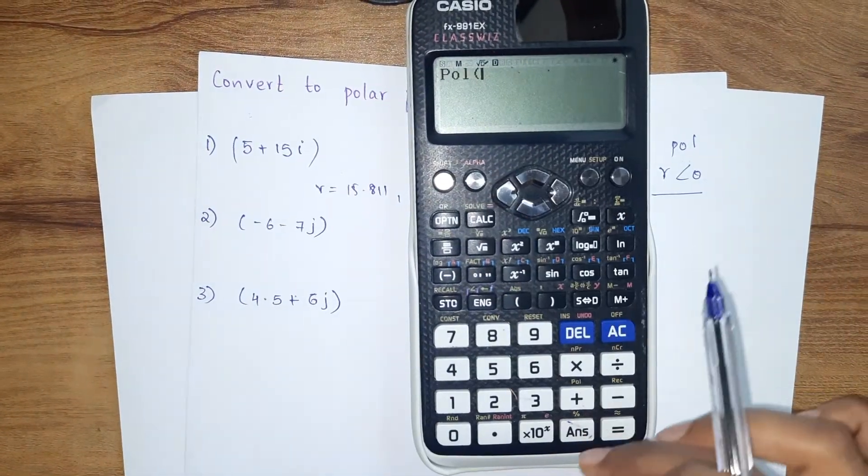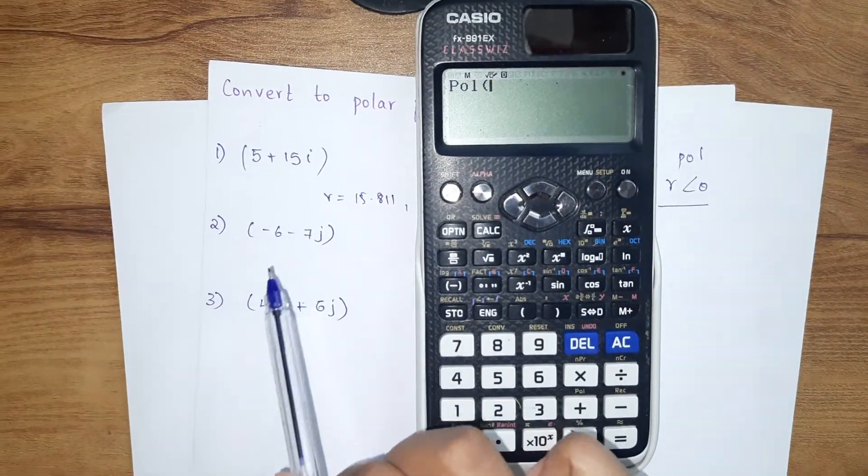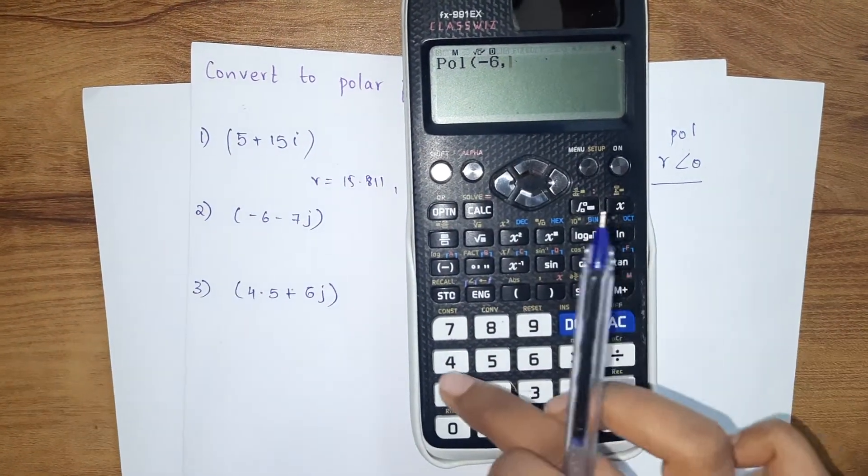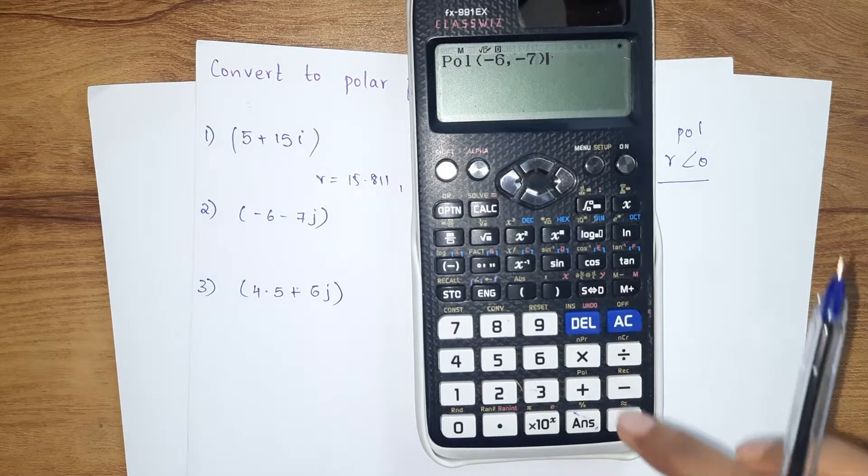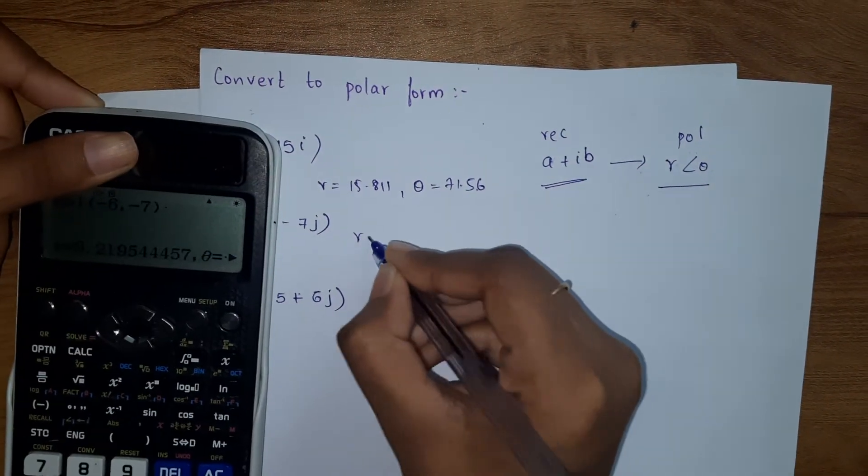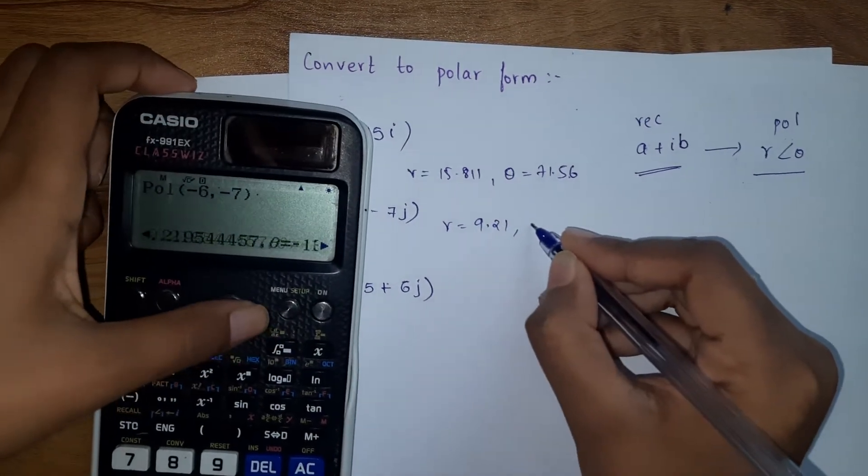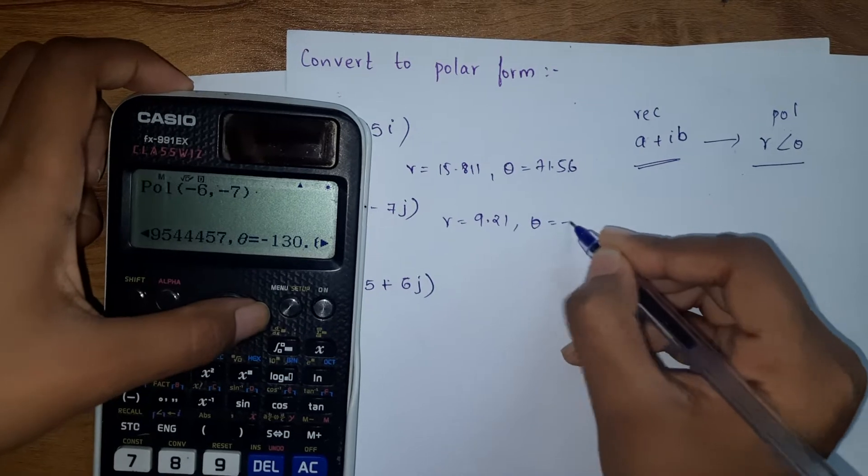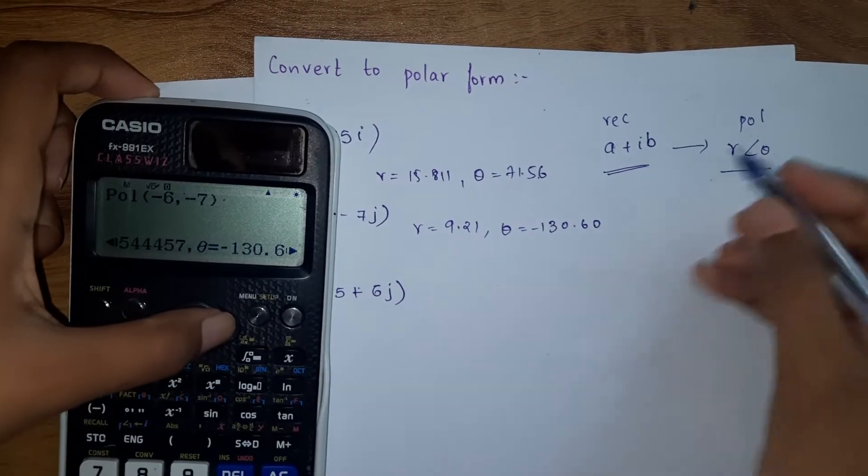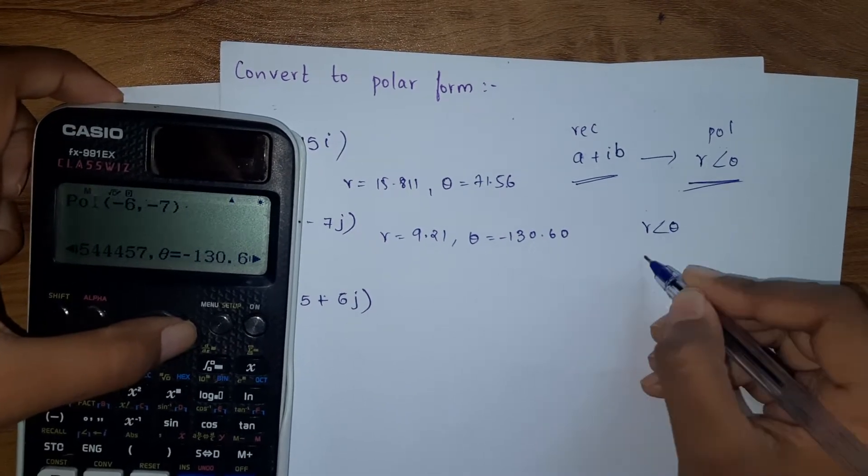Pole of the given question, that is minus 6 and minus 7. So minus 6, shift comma, minus 7, close the bracket. We got r is 9.21 and our theta will be minus 130.60 degrees. We can write it like r angle theta: 9.21 angle minus 130.60 degrees.